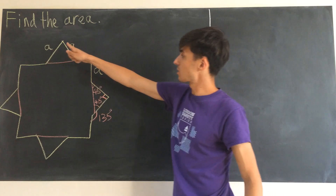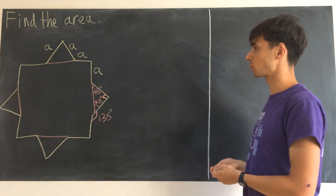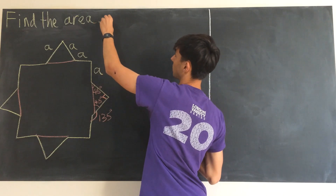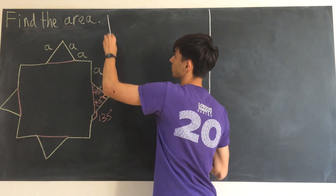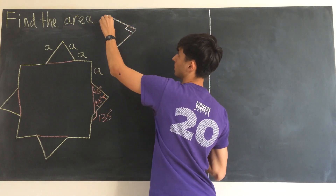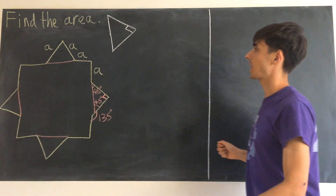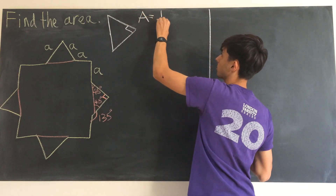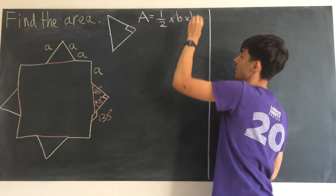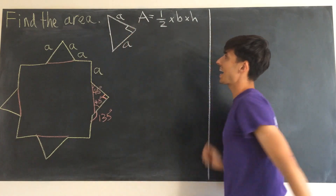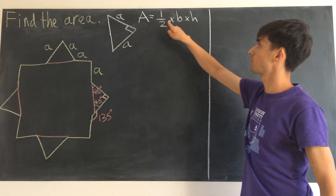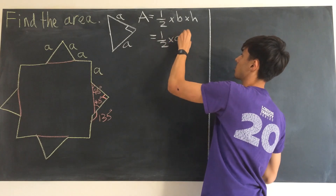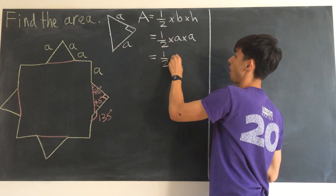That's really helpful because it means the four triangles on the outside are definitely right-angled triangles. The area of a right-angled triangle is a half times base times height. With side lengths of a, it should be clear the area is just a half times a times a, or a half of a squared.